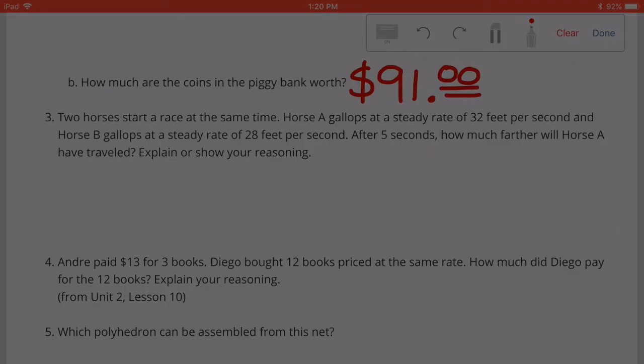Number 3: Two horses start a race at the same time. Horse A gallops at a steady rate of 32 feet per second and horse B gallops at a steady rate of 28 feet per second. After 5 seconds, how much further will horse A have traveled? Explain your reasoning.